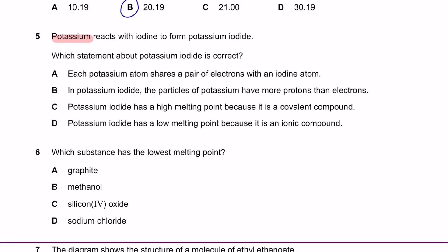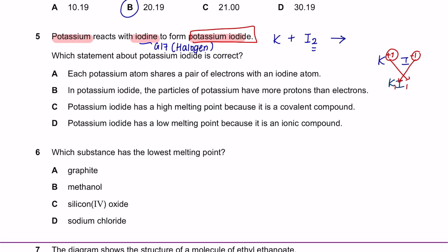Question 5: potassium reacts with iodine to form potassium iodide. Potassium is written as K. Iodine is from group 17 and presents as a diatomic molecule, so don't forget to write I₂. They form potassium iodide — the charge of potassium is +1 and the charge of iodine is −1. To get the formula, we cross the charges to get the molecular formula KI. To balance the equation with I₂, we put a 2 in front of KI, making 2 potassium, and balance with a 2 on the potassium side.